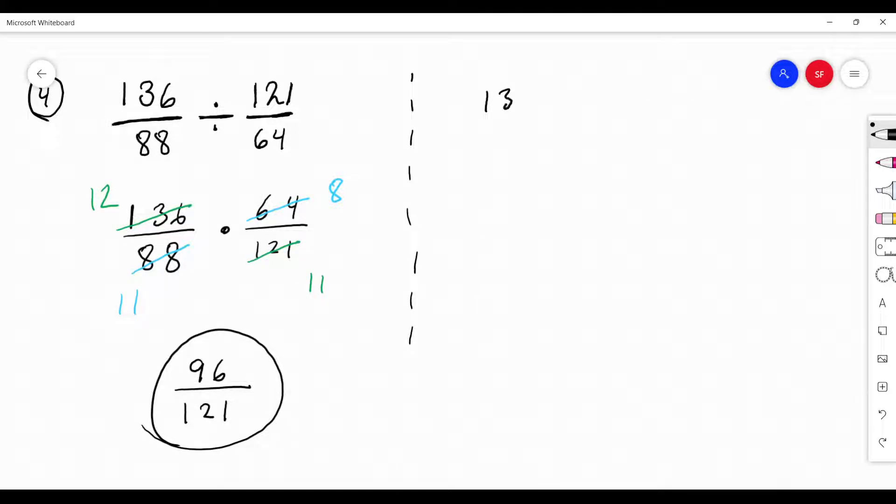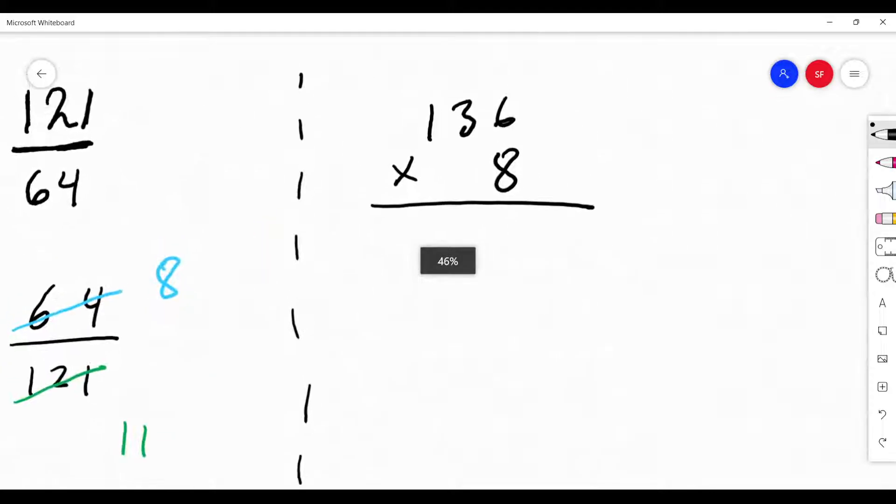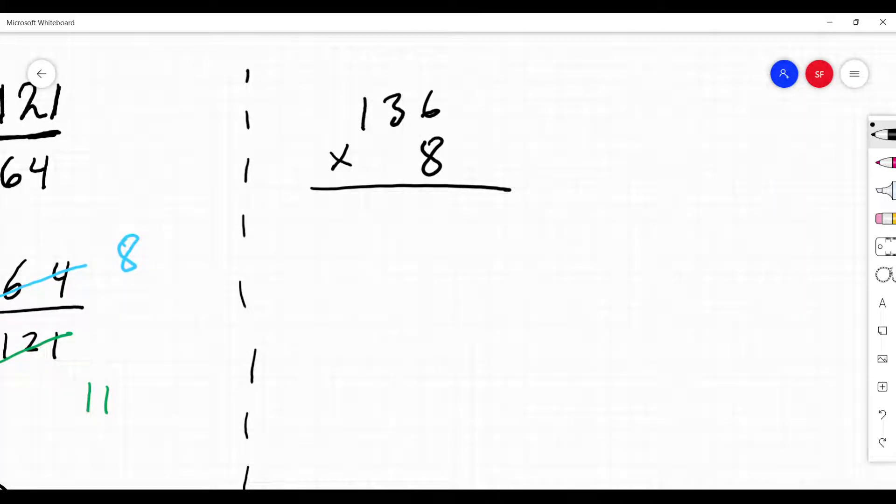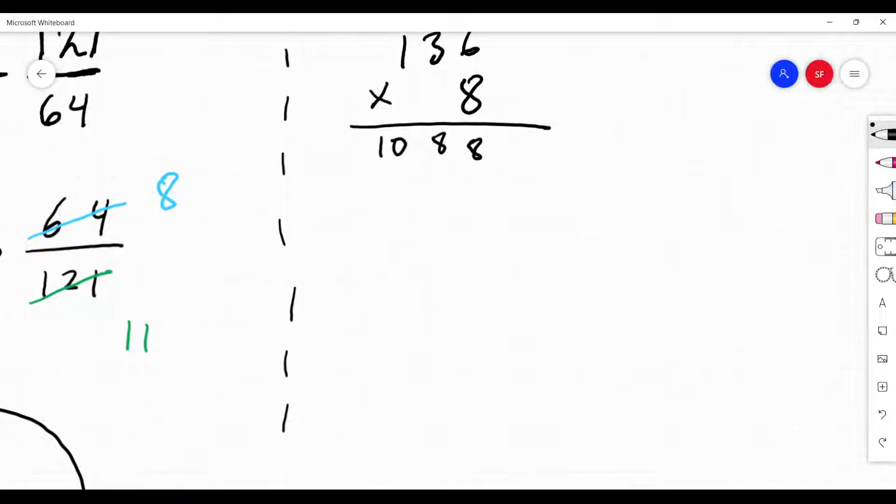So then you did 136 times 8. Let's check it. 136 times 8. 8 times 6 is 48. 8 times 3 is 24, plus 4 is 28. And then 8 times 1 is 8, plus 2 is 10.